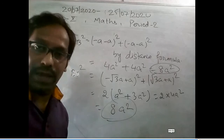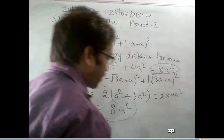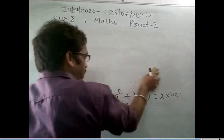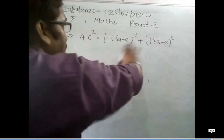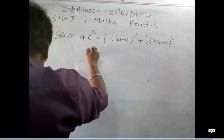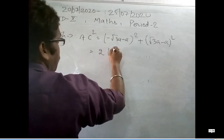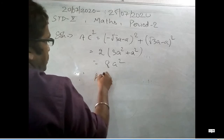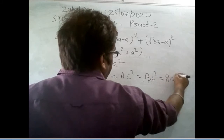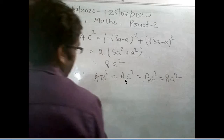Now only the third side has to become equal, then my conclusion will be true. Let us find AC. The value of AC is (x2 minus x1) whole square plus (y2 minus y1) whole square. This is A plus B whole square and A minus B whole square, and the 2a terms will be cancelled, so it will become 2 times 3a² plus a², that will become 8a². So AC² is also equal to 8a². I found that AB² equals BC² equals AC² equals 8a². If I remove the square, AB equals BC equals AC, so all three sides are equal. These are the vertices of an equilateral triangle.